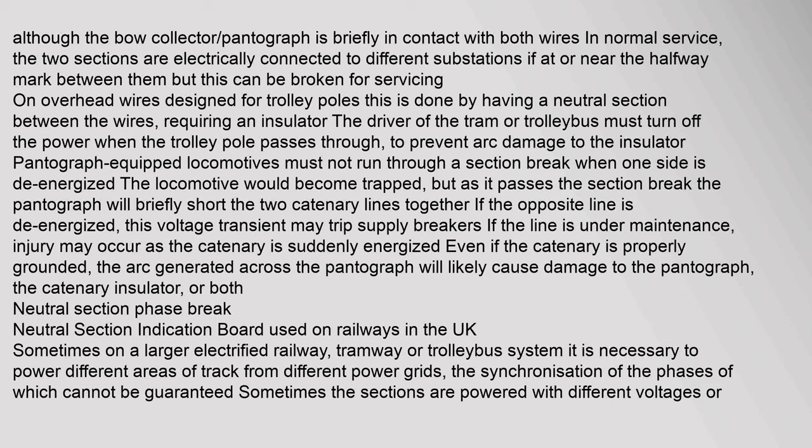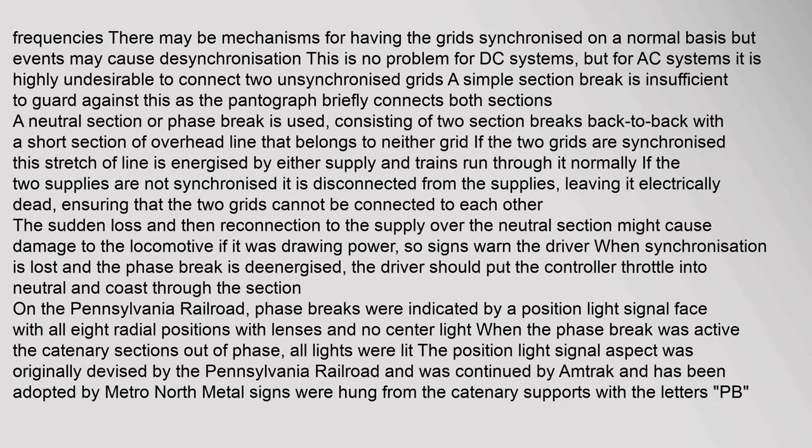On larger electrified railways, tramways, or trolleybus systems, it is sometimes necessary to power different areas of track from different power grids whose phase synchronization cannot be guaranteed. Sometimes sections are powered with different voltages or frequencies. For AC systems it is highly undesirable to connect two unsynchronized grids. A simple section brake is insufficient to guard against this, as the pantograph briefly connects both sections. A neutral section or phase brake is used, consisting of two section brakes back-to-back with a short section of overhead line belonging to neither grid.